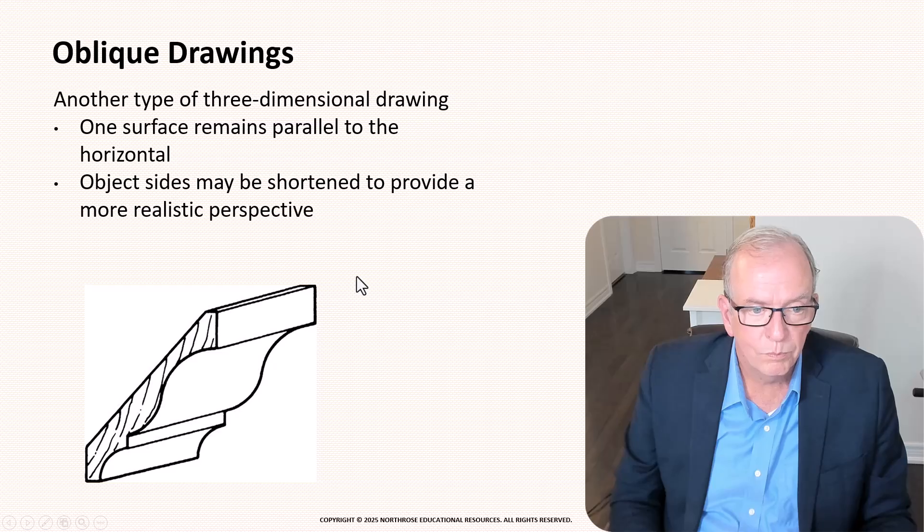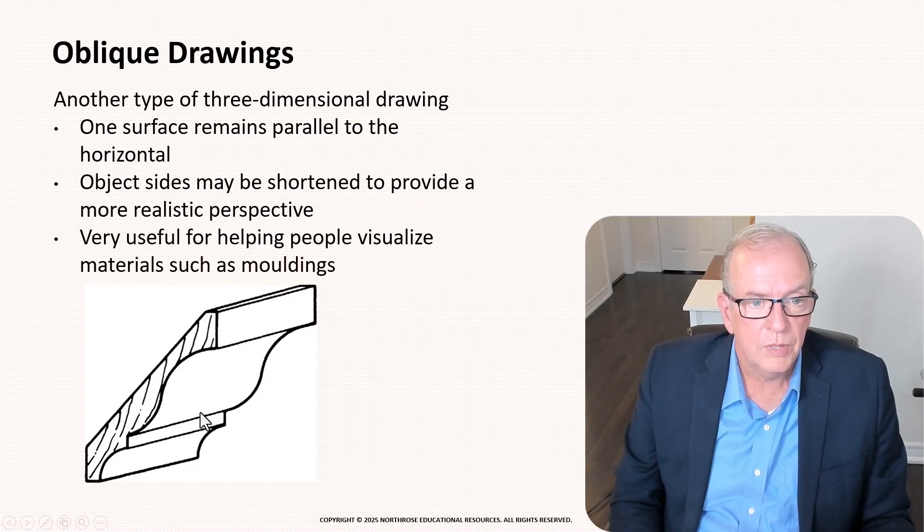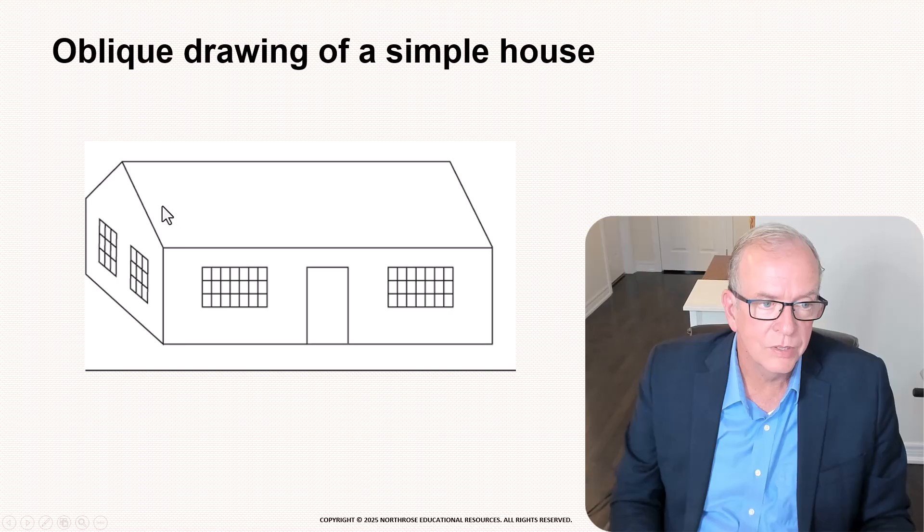But once you start pulling these lines off to the side it really now it's like okay I get it I get it it's a crown mold. So that usually is used very helpful for things like crown molds like you can do it for the houses and different things like that.